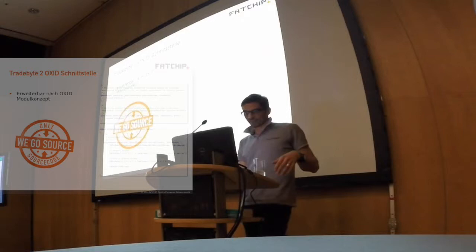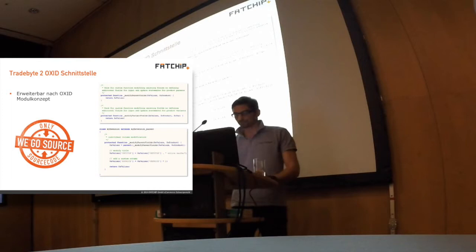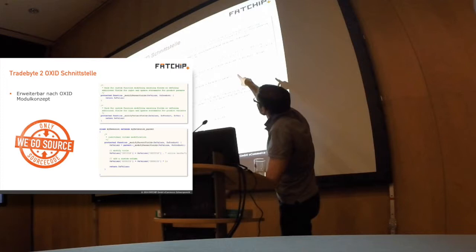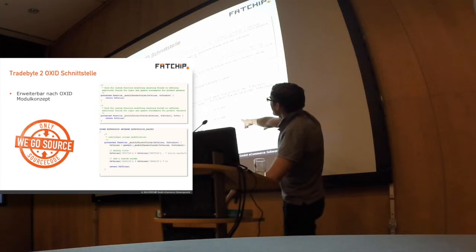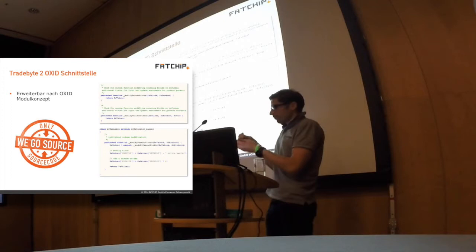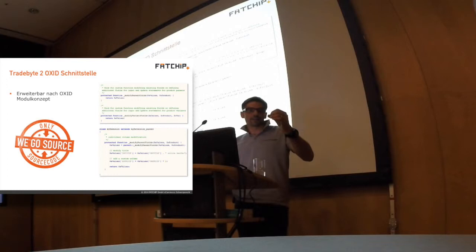At FETCHIP, everything is open source. Everyone who buys a module from us gets it open source, so you have the possibility to extend our modules with your own functionality. This is something I want to suggest other modules do too. We have hooks in the module — for example, a modified parent fields hook that puts in values and returns them right away. You can add your own values or modify them at the point where everything has been fetched from the Tradebyte REST API, right before it's written to the OXID database. A module can consist of core functionality but be extendable with individual needs.